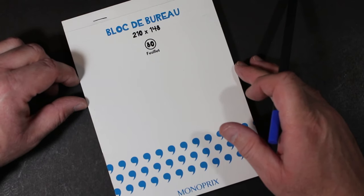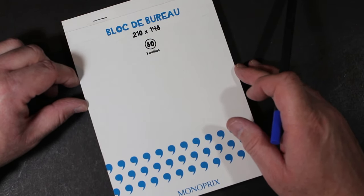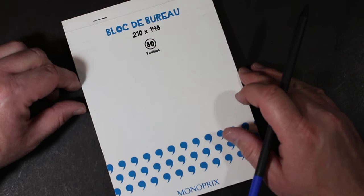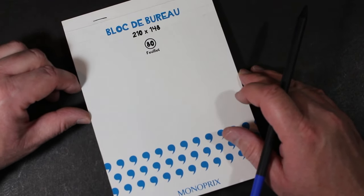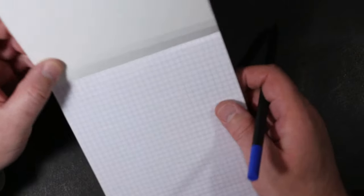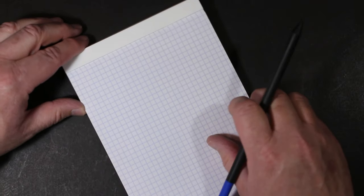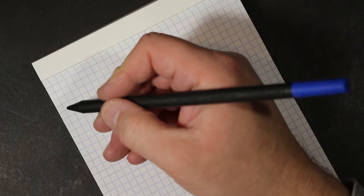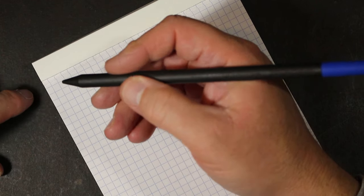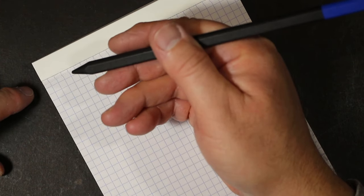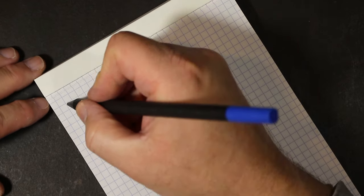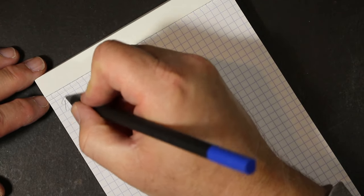At one of the many Monoprix stores that dot every neighborhood in Paris. They have a stationary section and I always make a stop there and see what they have. Let's just try this. It's round again with the exception of the one side that's flat. It is sharpenable, and I'm going to start things off just as it came with the point that was put on it at the factory and see what we get here.